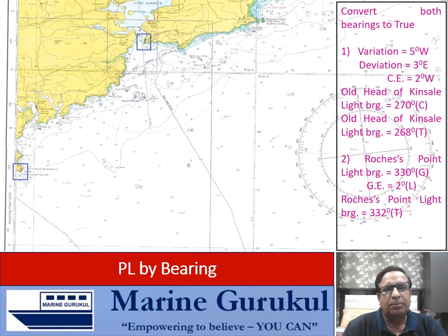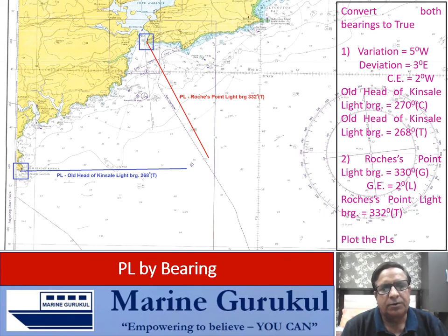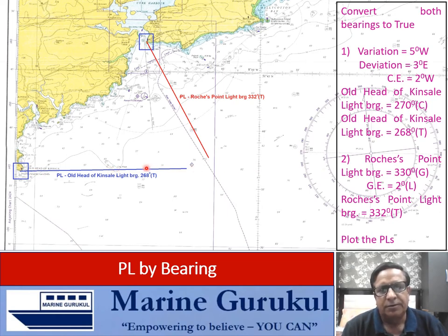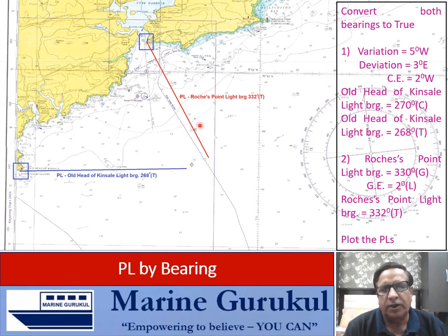We plot these bearings using compass roses, drawing the PL on the side on which the vessel may be — no need to draw on both sides. The Old Head of Kinsale PL is drawn in the reverse direction: if you are anywhere on this PL, the bearing of Old Head of Kinsale will be 268° true. Likewise, for Raushe's Point, the bearing is 332° true and the line is drawn in the reciprocal direction.